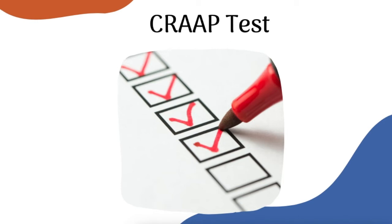The CRAAP test was created by Sarah Blakeslee and a team of librarians at California State University. Their test helps writers determine which sources they should keep and which ones they should toss out. It's not a simple yes or no question though — it's a checklist. Good writers have to weigh each individual piece of the checklist and then make a decision: does it stay or does it go?